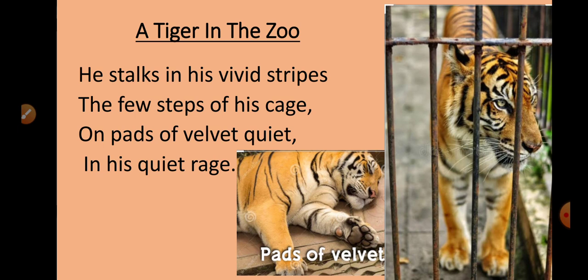In his vivid stripes — vivid means brightly colored, and stripes are the lines on the tiger's skin. So in his brightly colored stripes, the tiger moves in the cage.